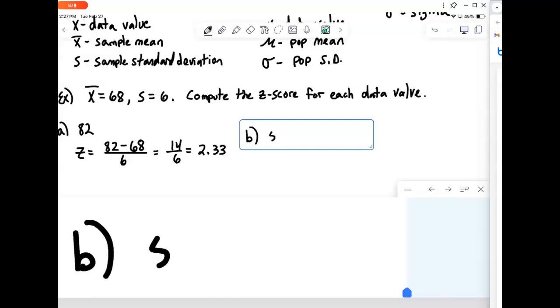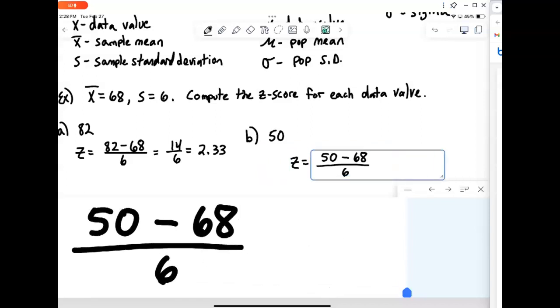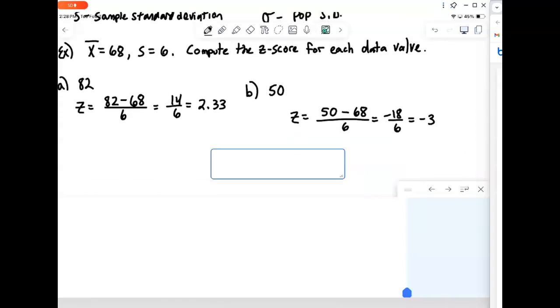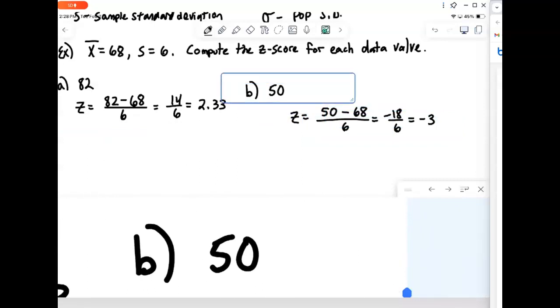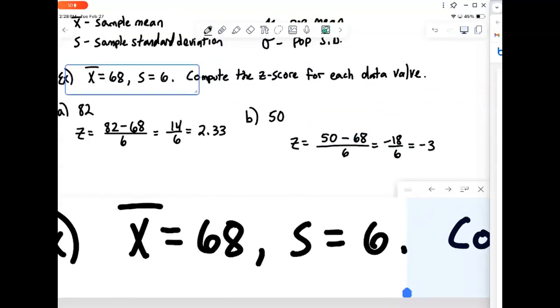Okay, let's consider the data value 50 here. Same process, z-score. It's just your data value minus your mean divided by the standard deviation. In this case we get negative 18 divided by 6, and our z-score is negative 3. So this tells us we're 3 standard deviations below the mean. 3 times 6 is 18. We're below the mean.